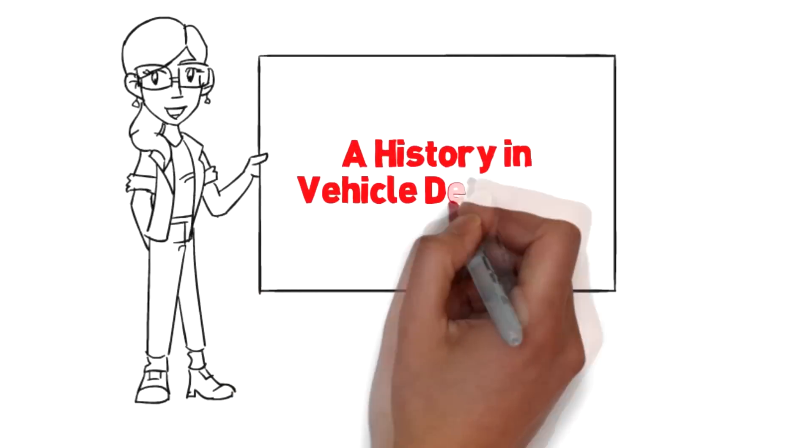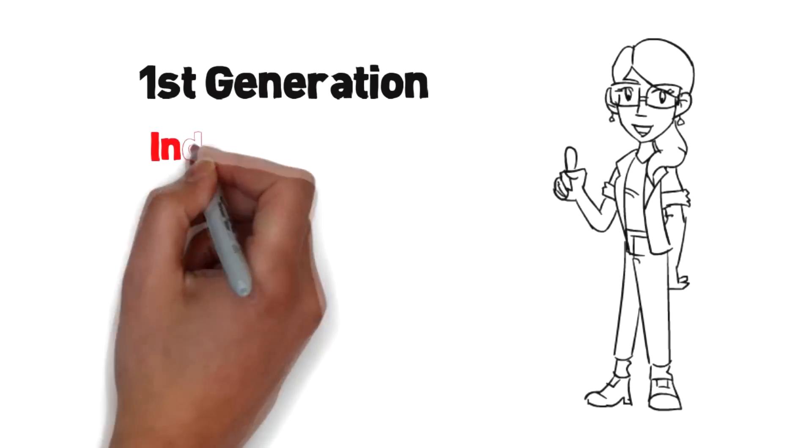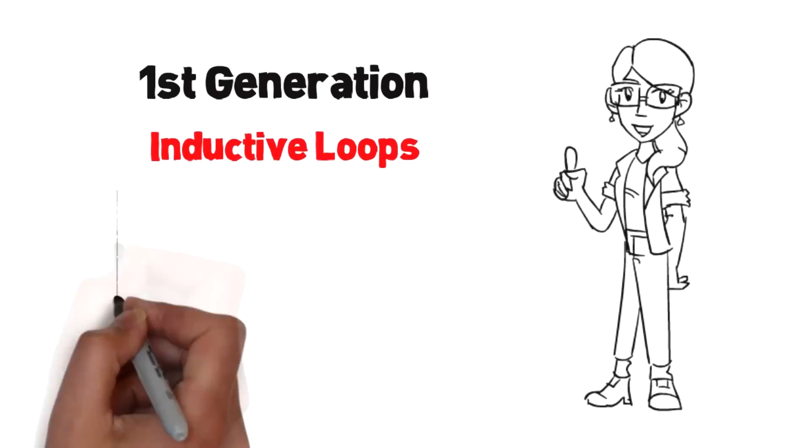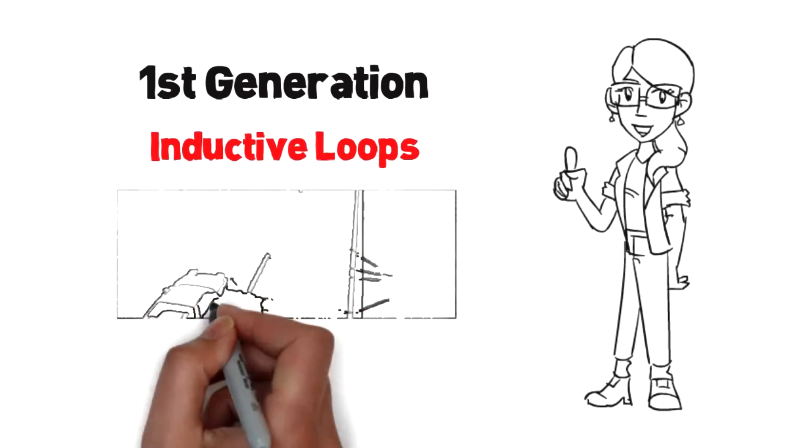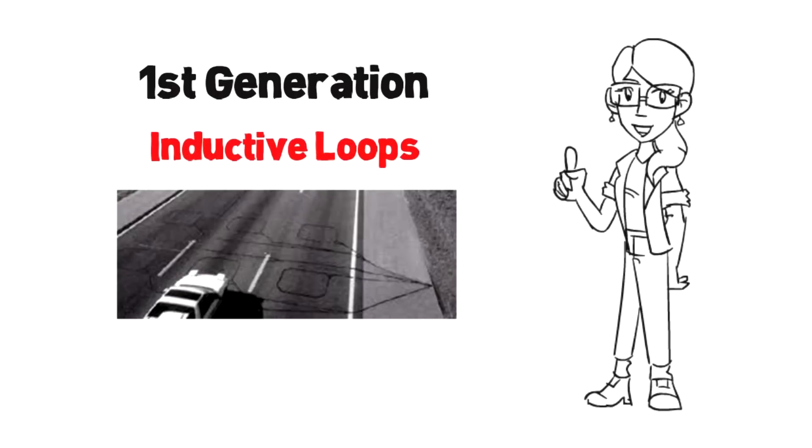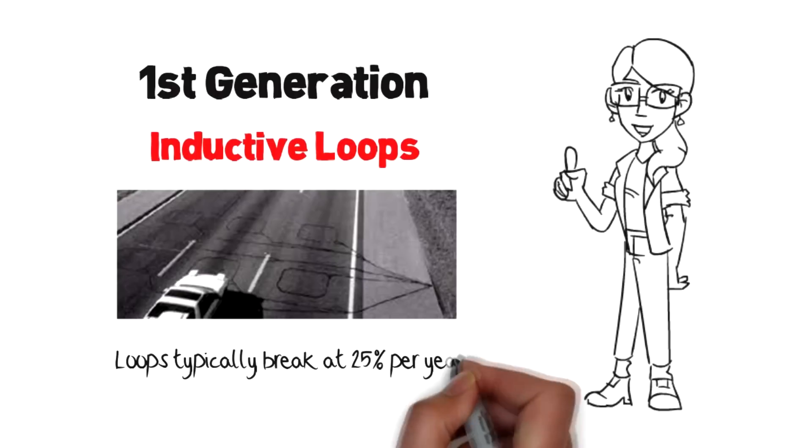A History of Vehicle Detection. First Generation: Inductive Loops. Loops have been used for decades and are a simple coil of wire cut in the pavement. Loops typically break at 25% per year, and each fix closes lanes.